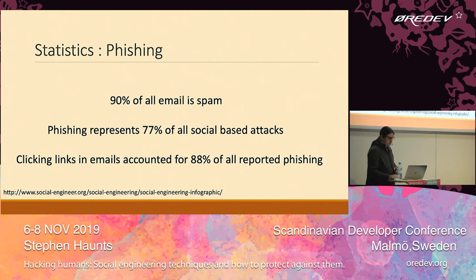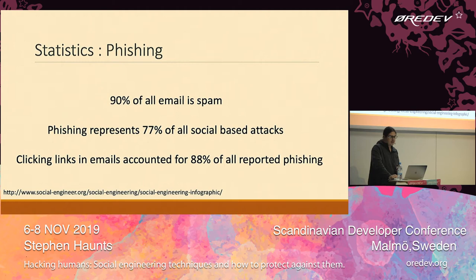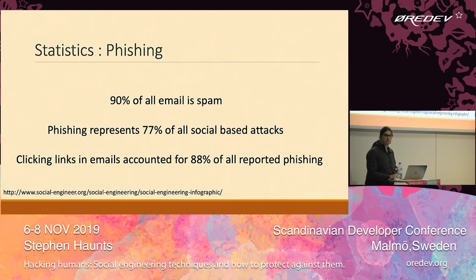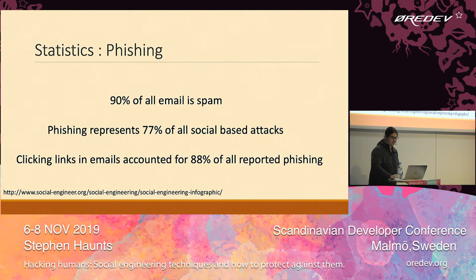Some statistics from socialengineering.org — a fantastic website if you want to learn more. With phishing, 90% of all email is spam. Phishing represents about 77% of all social-based attacks, so a lot of the time when criminals go out and try to extort money, it happens via email. I'm sure you've all received emails from Nigerian princes, or the typical extortion scams going around where an attacker claims they've caught you doing something dodgy on your computer — like viewing porn — and tries to get you to pay them in Bitcoin.